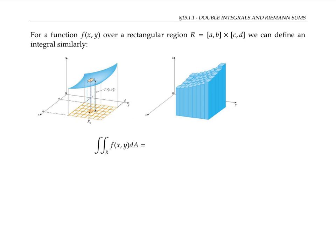We can use a similar method of Riemann sums to define the double integral of a function of two variables over a rectangular region, where the x values go from a to b and the y values go from c to d as drawn here. We start by dividing the interval from a to b into m little sub-intervals, each of width delta x. Next, we divide the interval from c to d into n sub-intervals, each of width delta y. That gives us a total of m times n sub-rectangles.